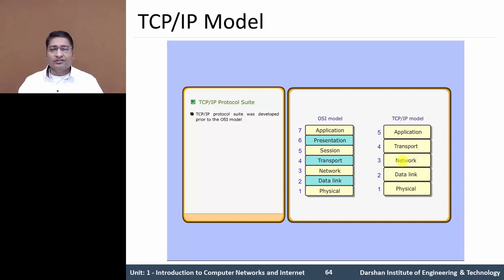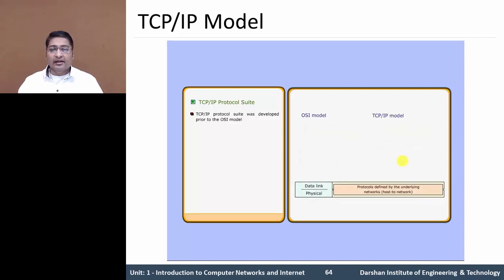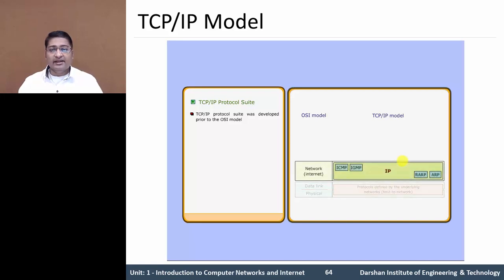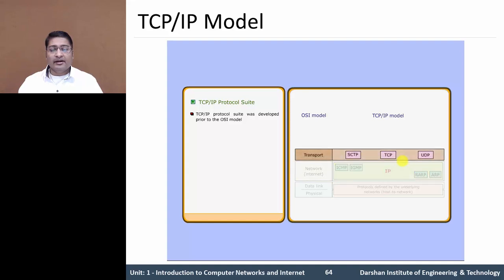In the TCP/IP model, the first one is the Physical Host-to-Host Network Layer, which is equivalent to 2 layers: Data Link Layer and Physical Layer. In TCP/IP, the protocol is defined by the underlying networks — host-to-host network.